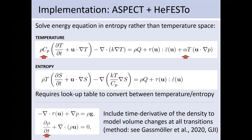Looking at the equations in ASPECT: in the temperature equation we have the adiabatic heating term with thermal expansivity, which has all these jumps in properties. In the entropy equation, this term is no longer present because it is automatically included in the entropy — entropy does not change along the adiabat. The specific heat, which also had many jumps, now only appears in the diffusion term. Otherwise the structure is similar, so we can use the same numerical methods for the advection-diffusion equation. We use a lookup table via Perple_X/HeFESTo to convert between entropy and temperature.